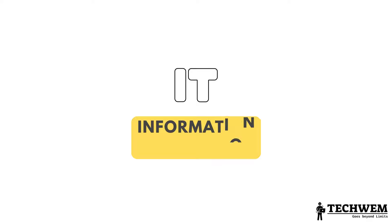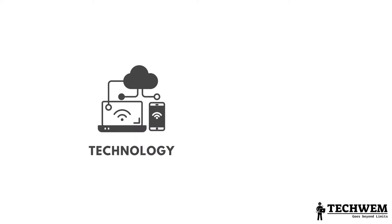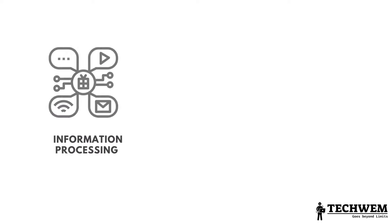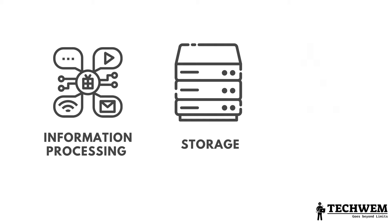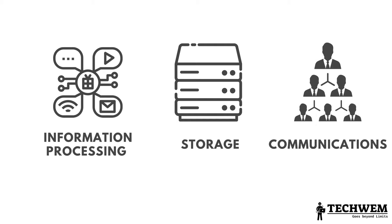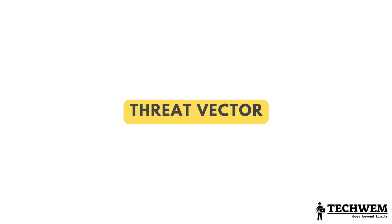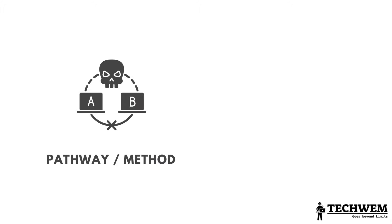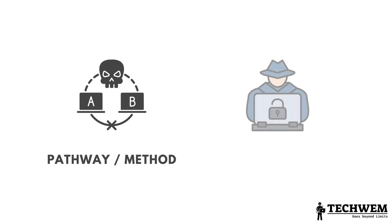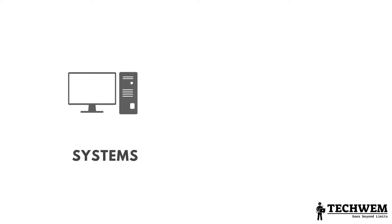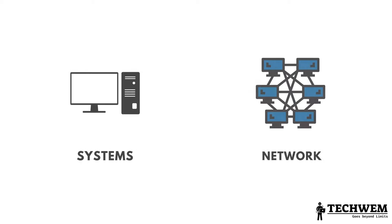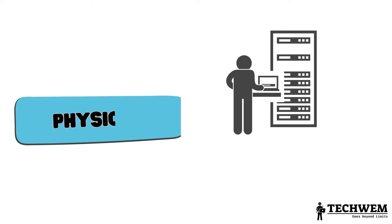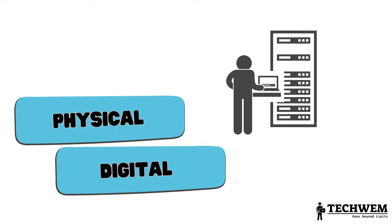Number 6: IT, Information Technology — the technology and systems used for information processing, storage and communication in business and administrative functions. Number 7: Threat vector — a specific pathway or method through which a cyber attack can be launched against a system or network. It could be through physical or digital means.